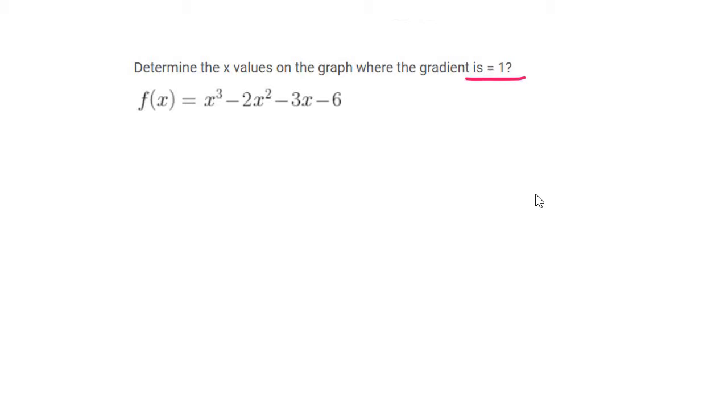They tell us in this question that the gradient of this graph is 1. Now we know that the gradient of a graph is the same as the first derivative. So what we do is we take the first derivative, which is going to be 3x squared minus 4x minus 3.